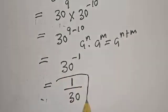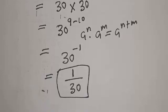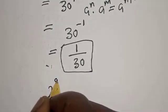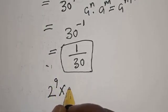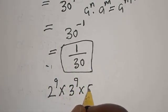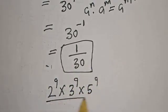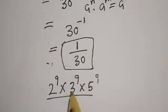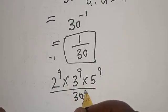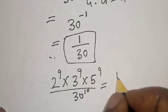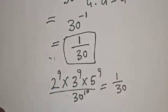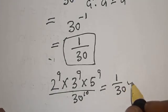This is our final answer. That is, 2 raised to power 9 multiplied by 3 raised to power 9 multiplied by 5 raised to power 9 divided by 30 raised to power 10 is equal to 1 divided by 30.